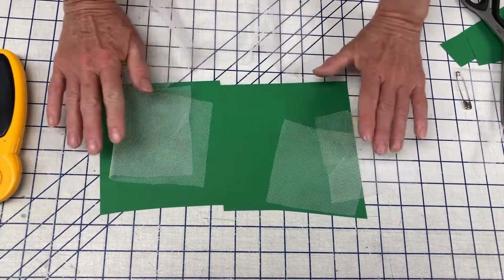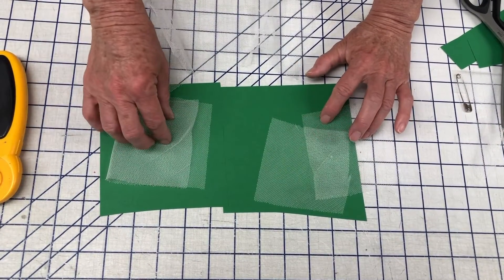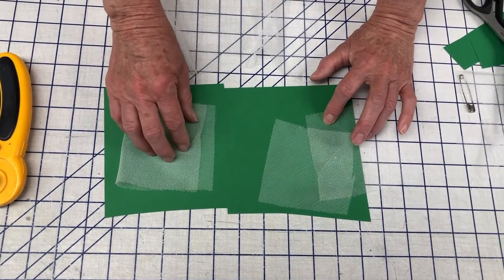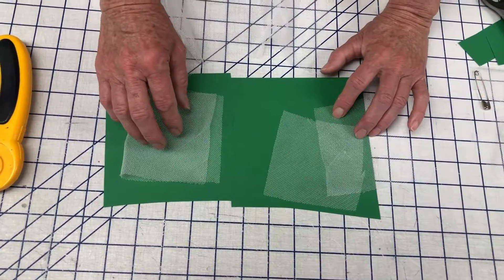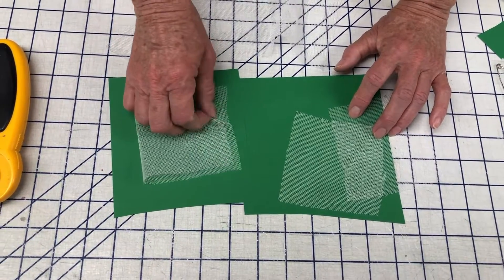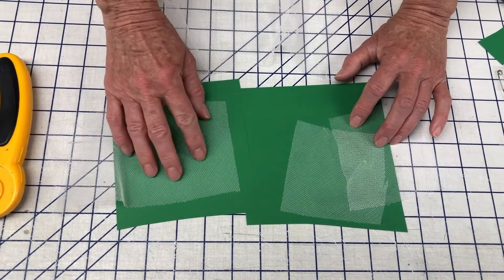So this is the reason we like to use a medium to dark color paper under our layers of tulle. Now if I only had one layer, I'd still want paper under it.